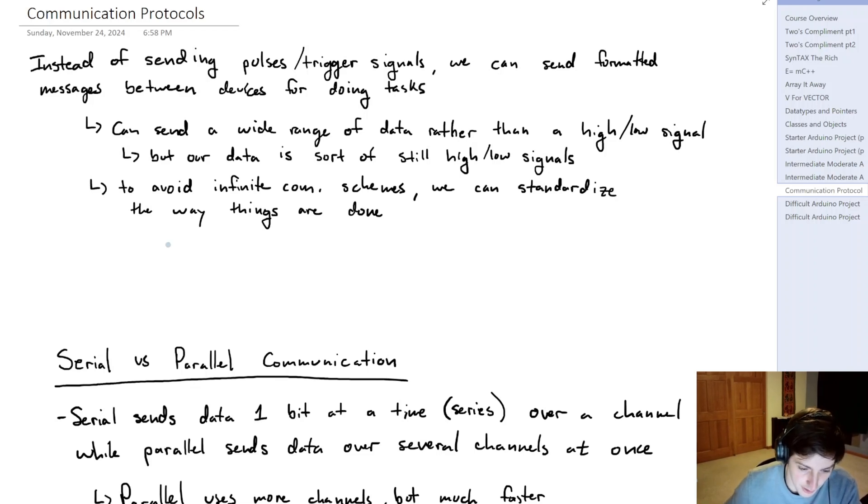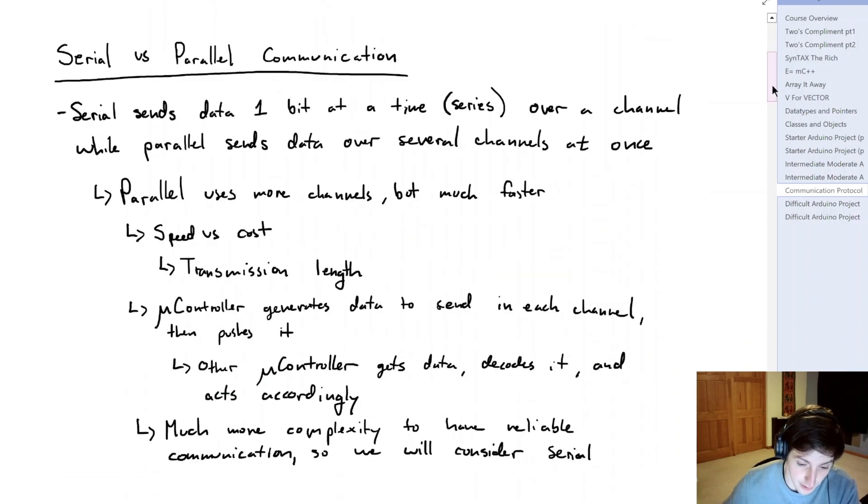So we need to investigate these standardized communication protocols. This allows us to send a wide range of data rather than just having this high-low transition. And to avoid infinite communication schemes, we standardize the way that things are done. But to get into how communication schemes can work, we need to look at the different ways that we can communicate between devices.